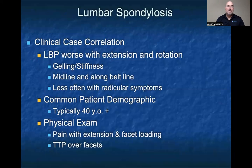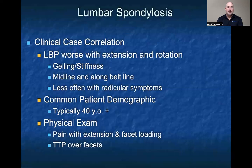The next condition is lumbar spondylosis. These patients tend to have low back pain that's worse with extension and rotation. They may experience gelling or stiffness after sitting for a long period, and this pain tends to be axial or more midline, as opposed to going down the legs. It also tends to radiate along the belt line, especially at lower levels like L4-L5 and L5-S1. Less often these patients have radicular symptoms, but they could be present if there's significant synovitis causing neuroforaminal compromise. The common demographic is someone who's 40 plus. On physical exam, pain is consistent with extension and facet loading — rotating the lumbar spine to the left or right and then going into extension loads the facets. They may also be tender over the facets and paraspinal muscles.